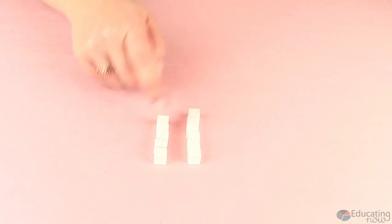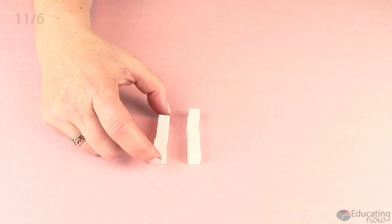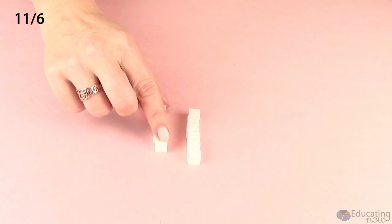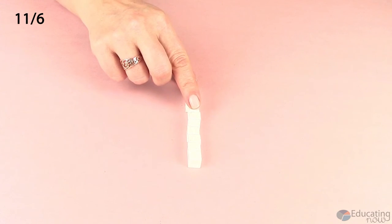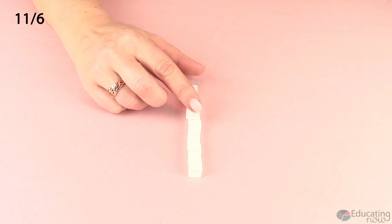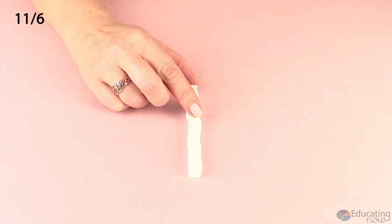So the first example we're going to look at is I'm going to ask my students to show me 11 sixths. Now many of them will make one big long train. What I like to do is I go around and I see if any students, and there usually are at least a few, that have it lined up this way.